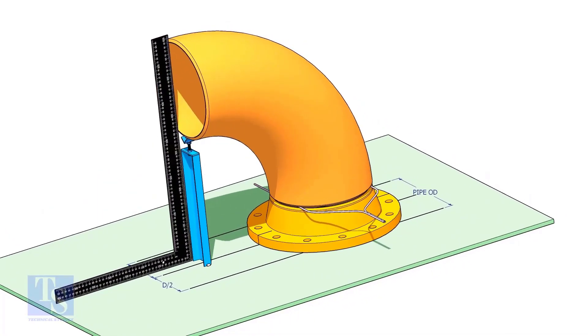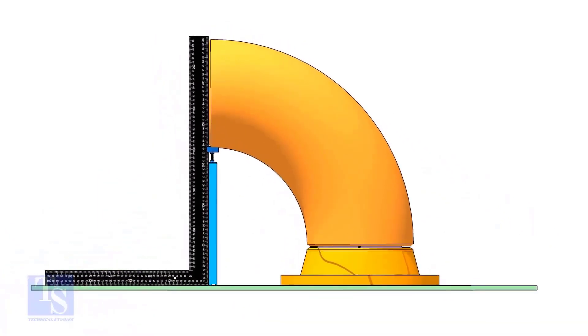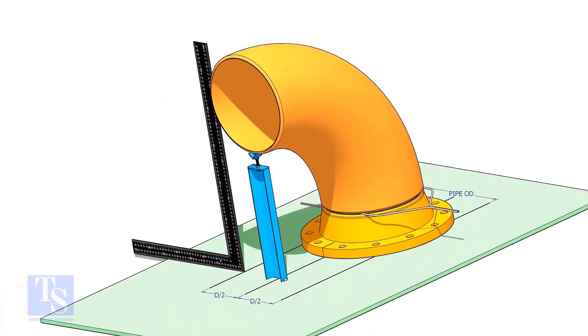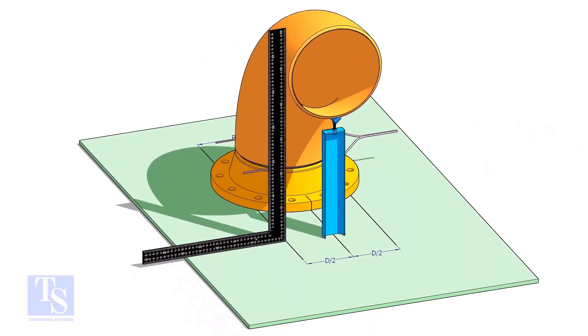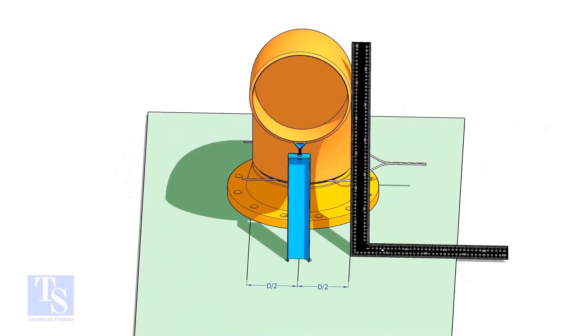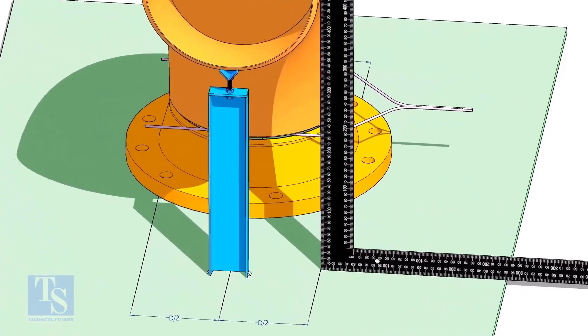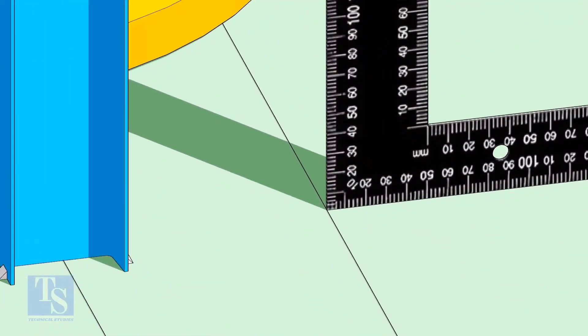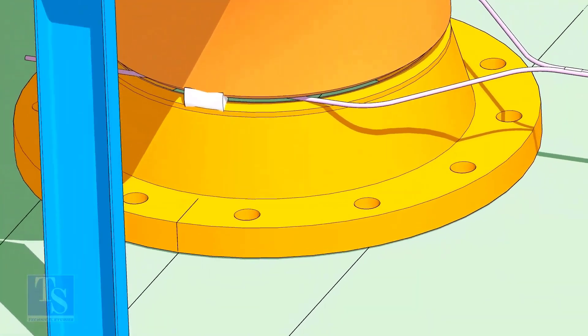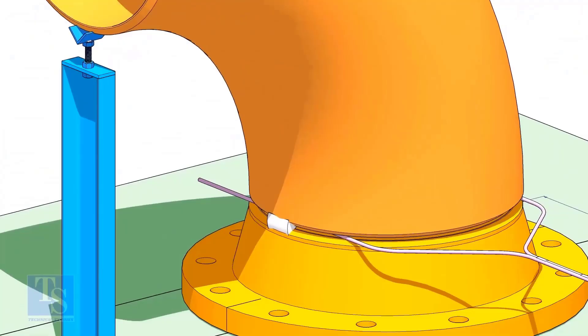The straightness of the plate is a must. Make sure the face of the elbow and the lines are parallel. Tack weld on all four sides.